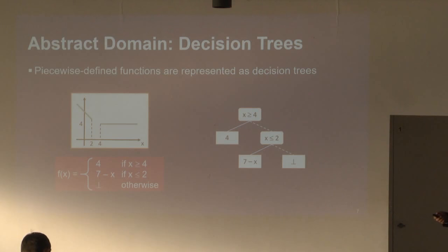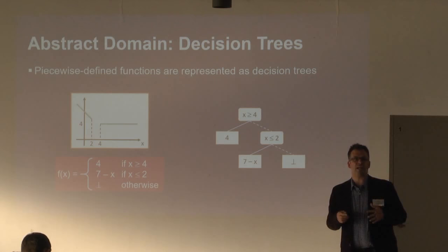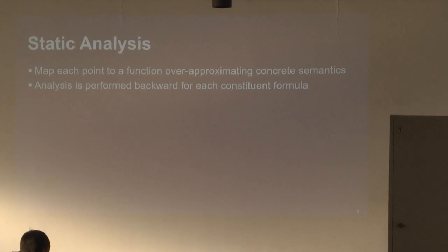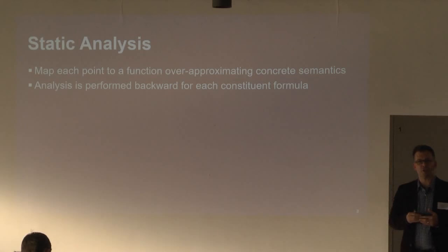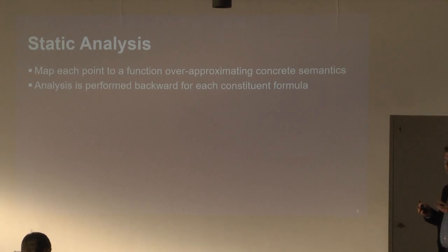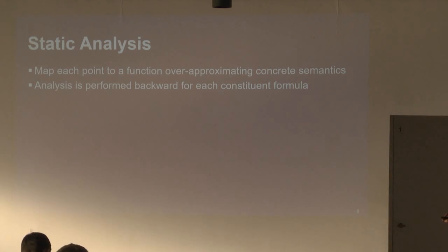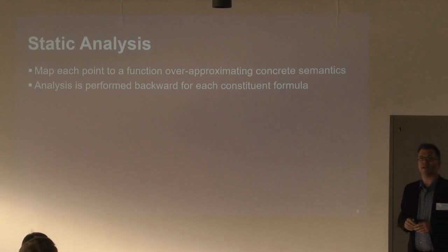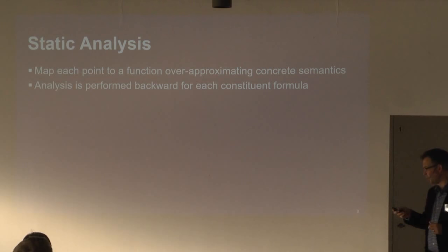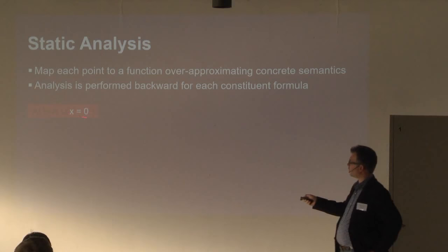The actual analysis is quite complicated — details are in our paper at SAS this year. At a high level, we define a static analysis that at each program point computes a piecewise-defined function that over-approximates the lambda function. In particular, if the abstract piecewise-defined function is defined, the underlying lambda function is also defined and we know the property holds. The analysis works as a backward analysis, and for the CTL formula we proceed inside-out: starting with the constituent formulas and combining those results for the whole formula.